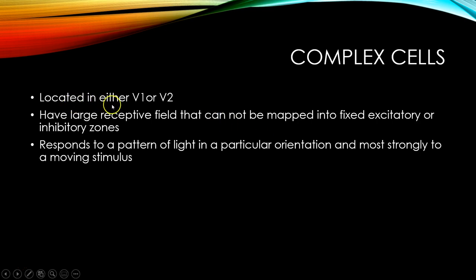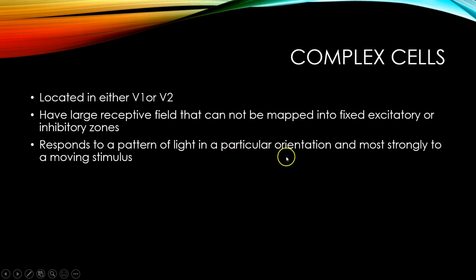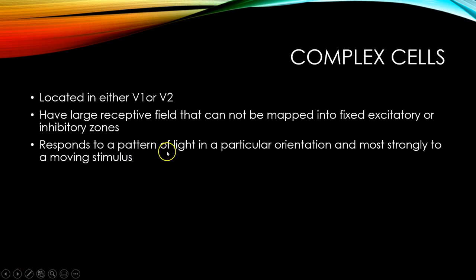Complex cells are located in either V1 or V2. They have large receptive fields that can't be mapped into fixed excitatory or inhibitory zones. They respond to a pattern of light in a particular orientation and most strongly to a moving stimulus — these cells start to fire when there's a moving stimulus in a particular orientation.